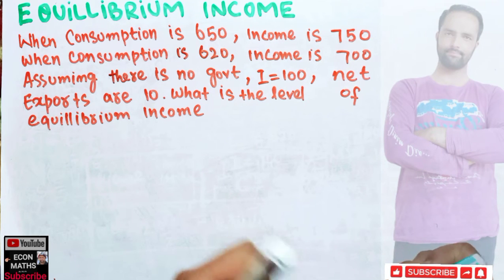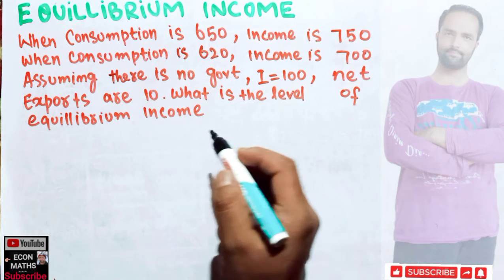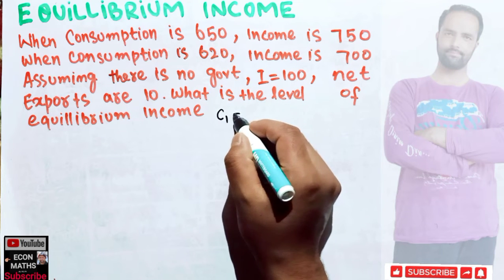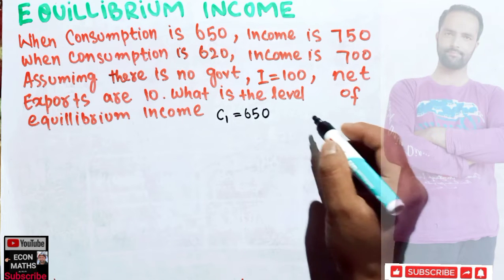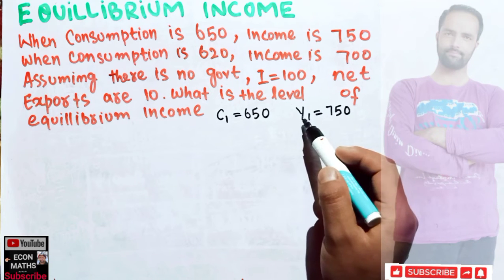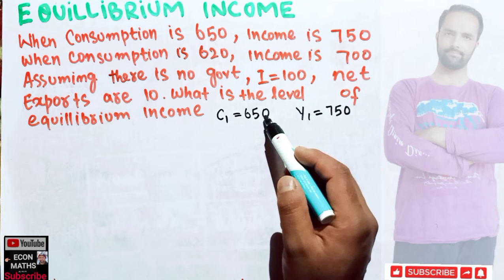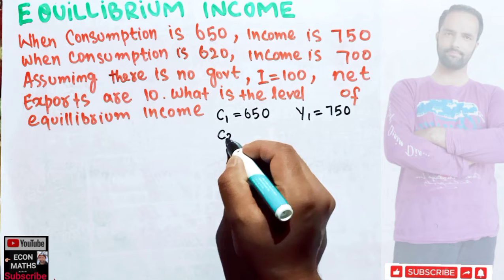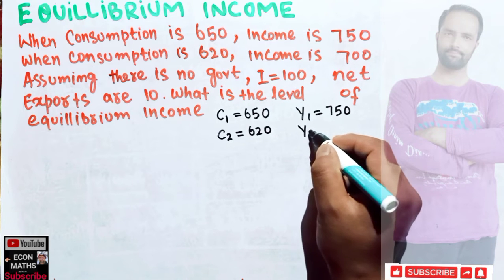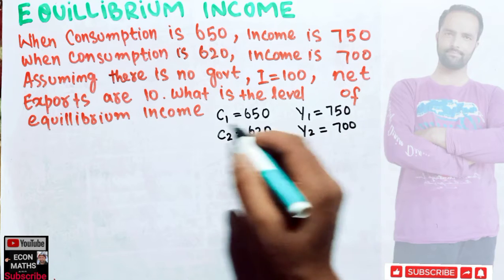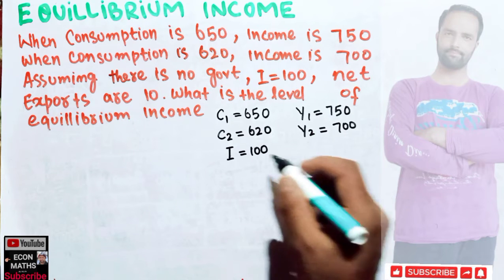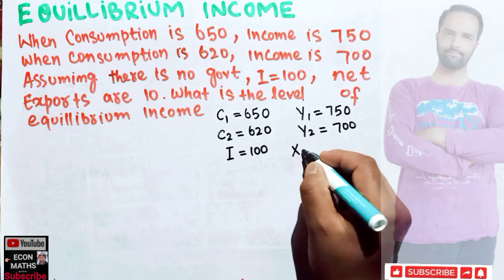We have to find the equilibrium level of income. We are told that initially consumption C1 is 650 and corresponding income Y1 is 750 — meaning when income is 750 dollars, consumption expenditure is 650. Similarly, when consumption C2 was 620 dollars, income Y2 was 700. We are also told there is no government expenditure, autonomous investment is 100, and net exports (exports minus imports) are 10.